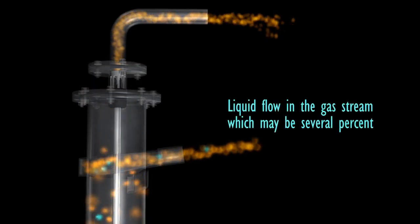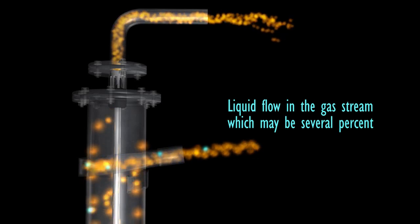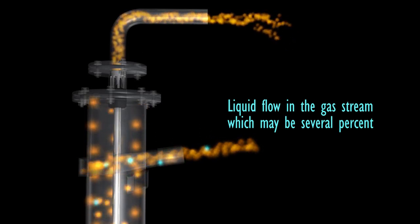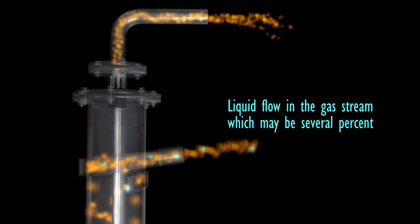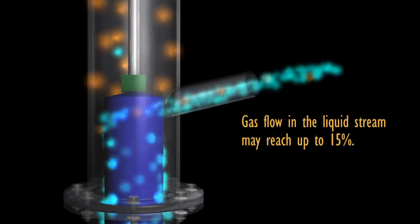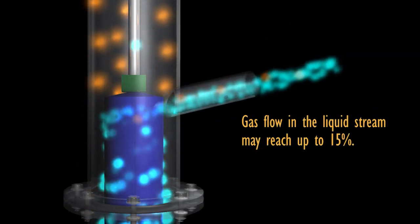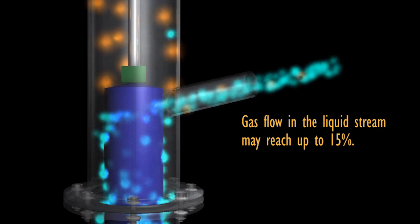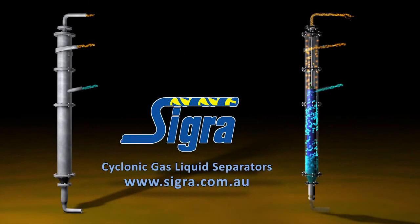The separator has the ability to handle a liquid flow in the gas stream which may be several percent and may come in slug form. The gas flow in the liquid stream may reach up to 15 percent. Sigra cyclonic separators come in a variety of sizes and with varying nozzles to suit different flow ranges.